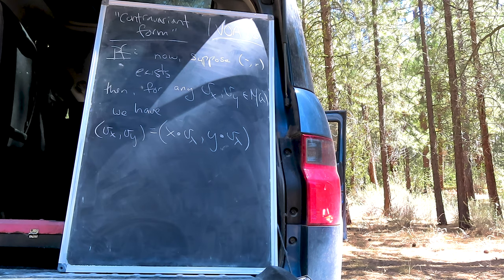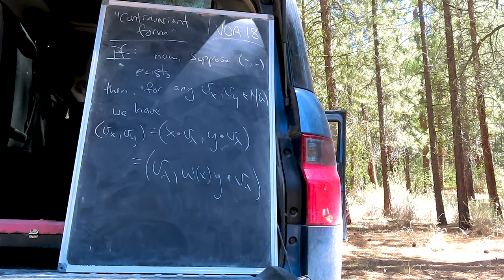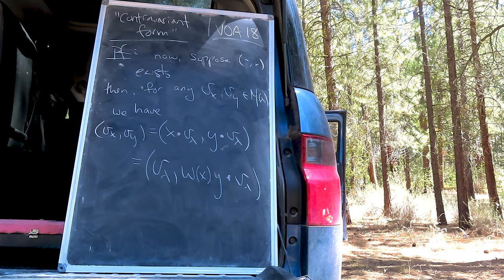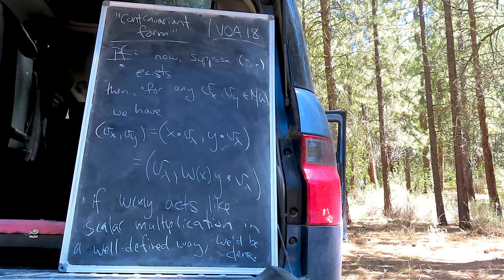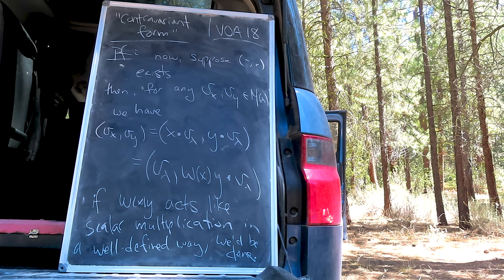Using the definition of the assumed bilinear form, we have a kind of standard representation for this bilinear from which we can observe the following. If Omega acts within the bilinear as scalar multiplication in a well-defined way, we'd be done. It would be uniquely defined, but also we would have shown by construction that it exists.